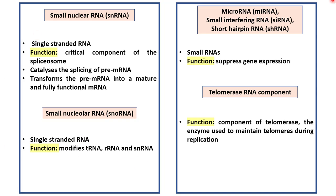We can talk about microRNA or miRNA, small interfering RNA or siRNA and short hairpin RNA or shRNA. These three RNAs are very small and all are used to suppress gene expression. If you wish to know about them in detail, please check the description box.